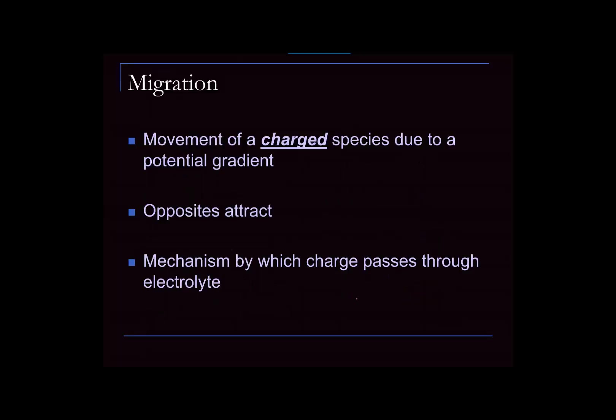The second mode of mass transport is migration. There are two things that must be true for a material to migrate: first, it must have a charge — if a compound is neutral, it won't migrate. Second, there must be an applied electric field. Just sticking a metal in solution won't make a charged species migrate; you need to apply a voltage to that piece of metal to create an electric field. Depending on the charge, the material will either migrate towards the electrode or away from it — the direction is determined by the charge of the species relative to the applied potential. Opposites attract — it's a Coulombic interaction.